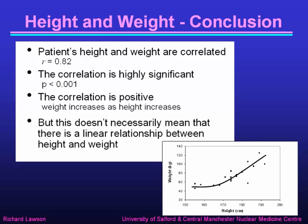However, this doesn't necessarily mean there is a linear relationship between height and weight. If we look at the best line drawn through our scatter graph, we see that although it tends to be linear at heights above about 170 cm, it's actually much flatter below that. So although there is an overall highly significant correlation, that doesn't necessarily mean we've got a straight line. In this case the data is definitely quite curved. That's the end of part three of this lecture.